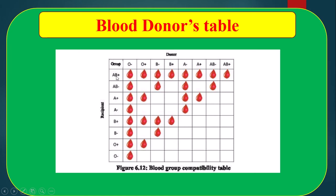Blood group AB positive — you know, blood groups are again divided into positive and negative. Blood group A, blood group B, blood group AB, and blood group O — these four groups are again divided into positive and negative, making a total of eight blood groups.